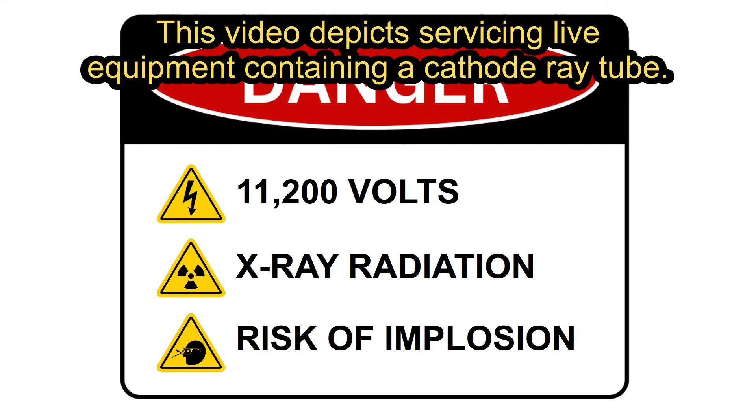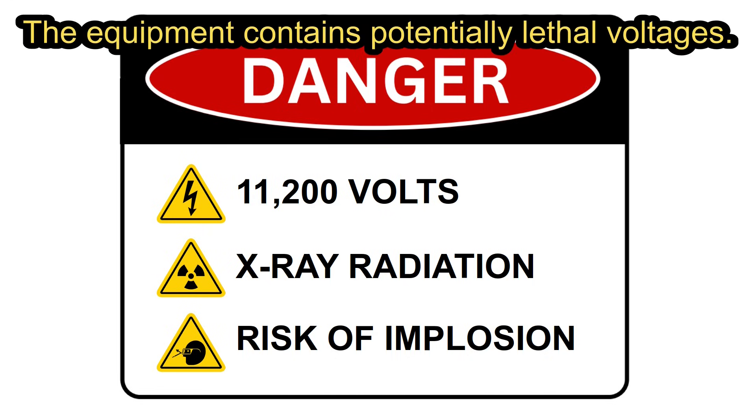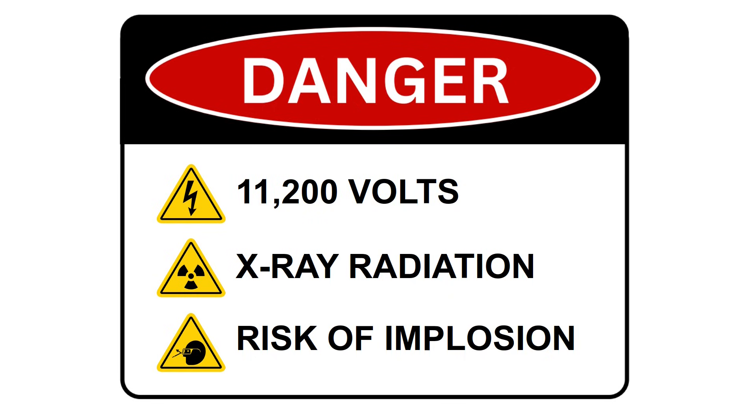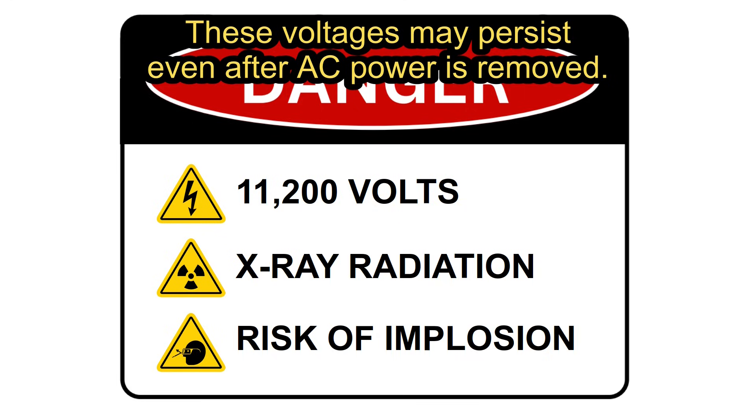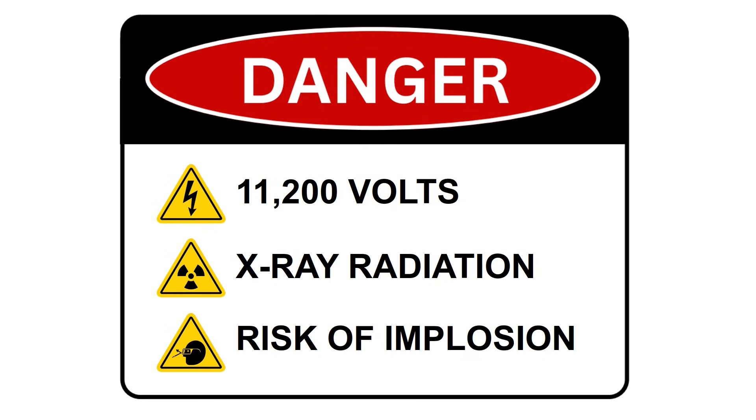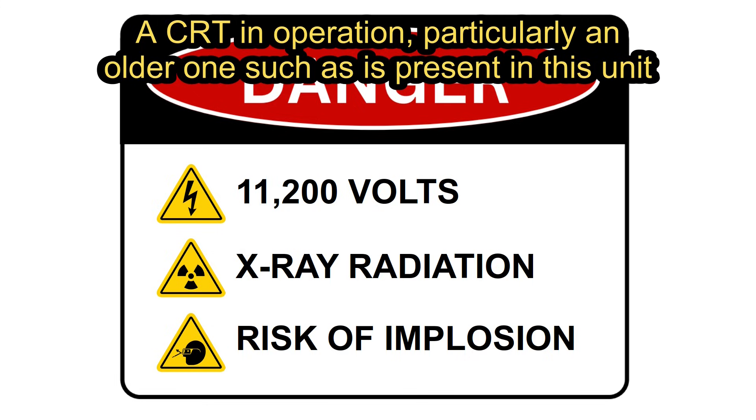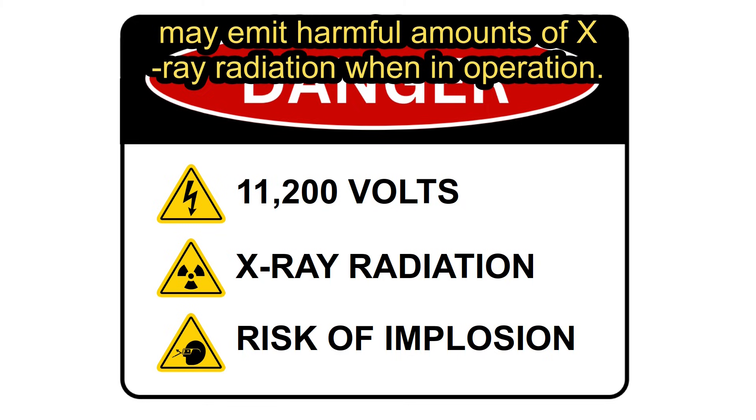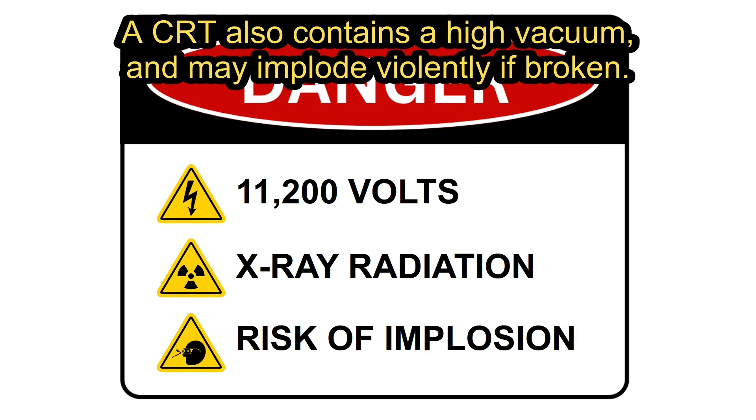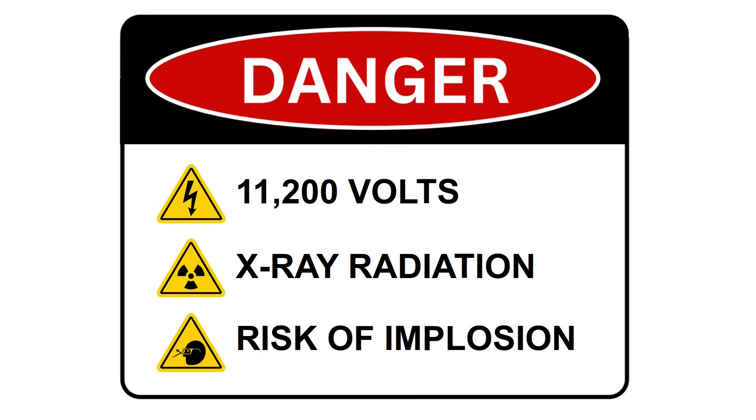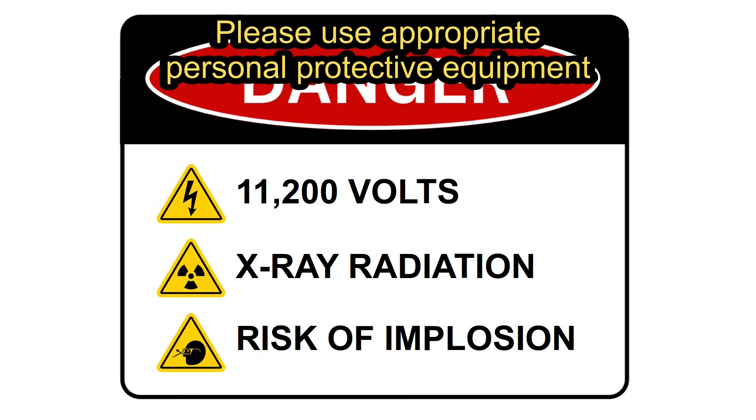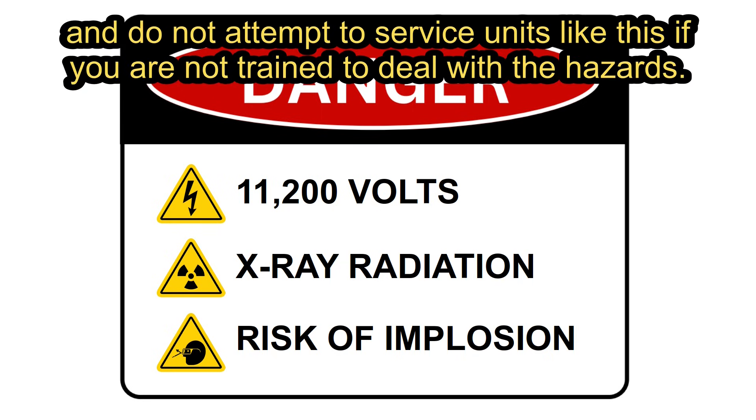This video depicts servicing live equipment containing a cathode ray tube. The equipment contains potentially lethal voltages. These voltages may persist even after AC power is removed. A CRT in operation, particularly an older one such as is present in this unit, may emit harmful amounts of X-ray radiation when in operation. A CRT also contains a high vacuum and may implode violently if broken. Please use appropriate personal protective equipment and do not attempt to service units like this if you are not trained to deal with the hazards.